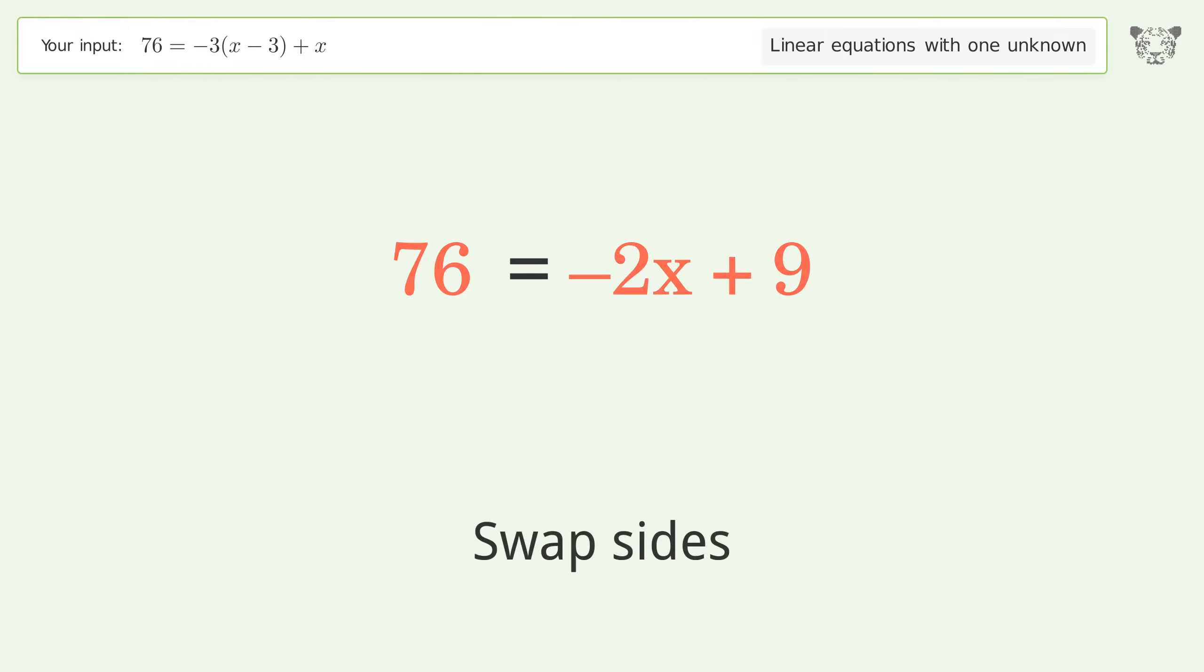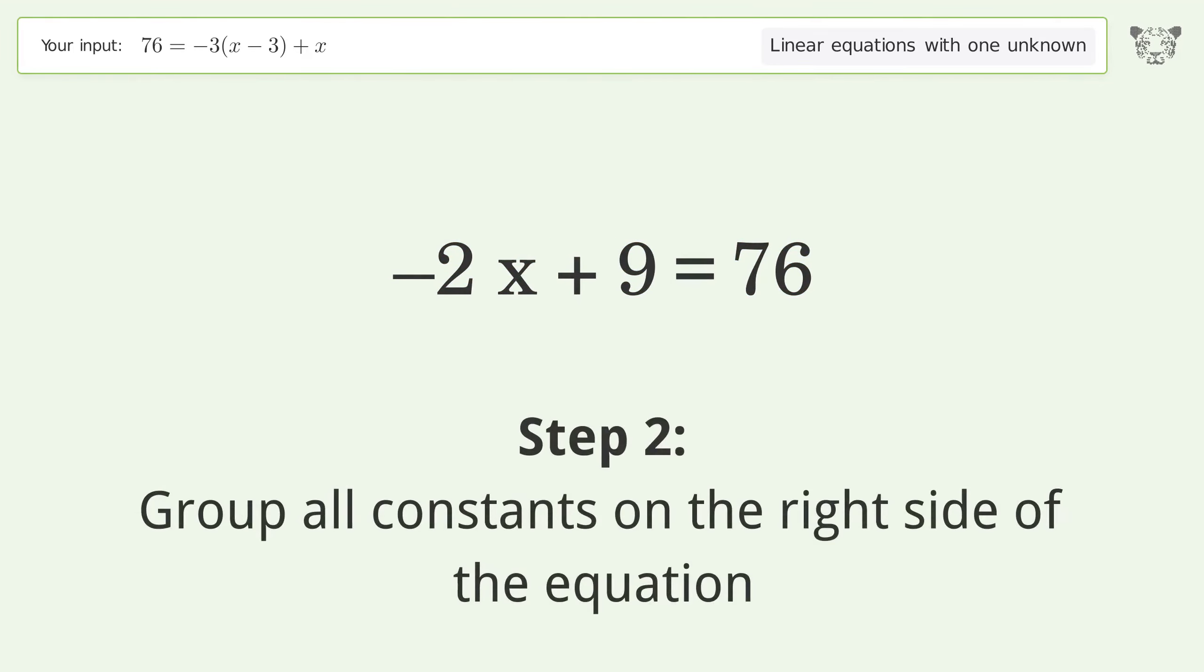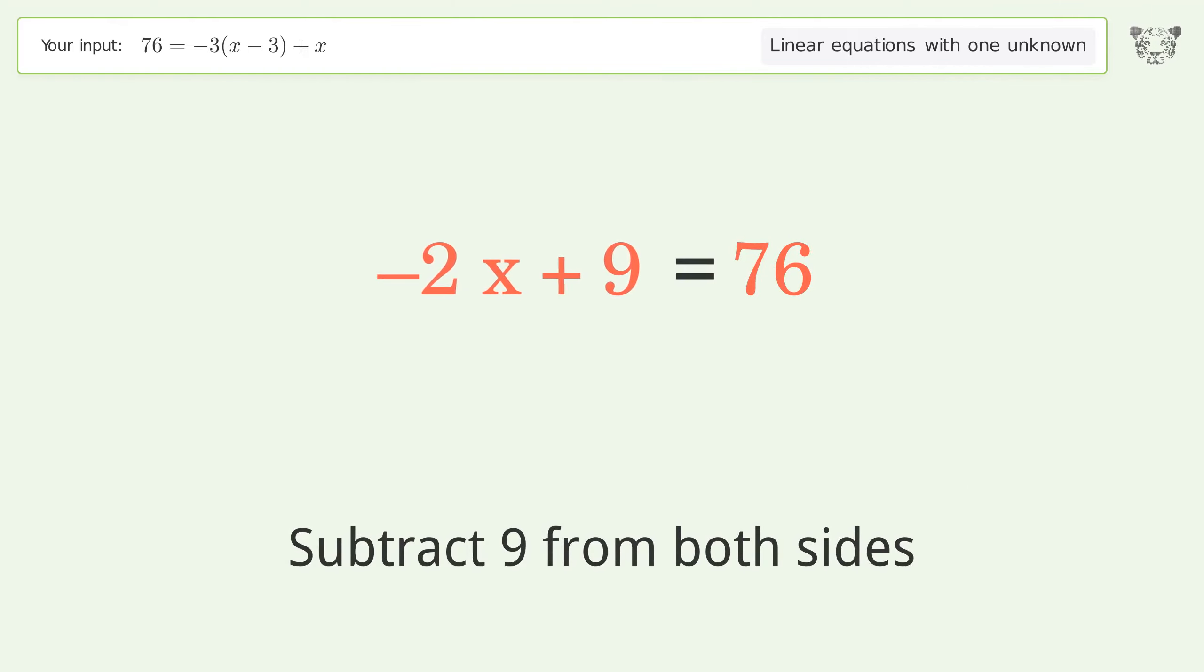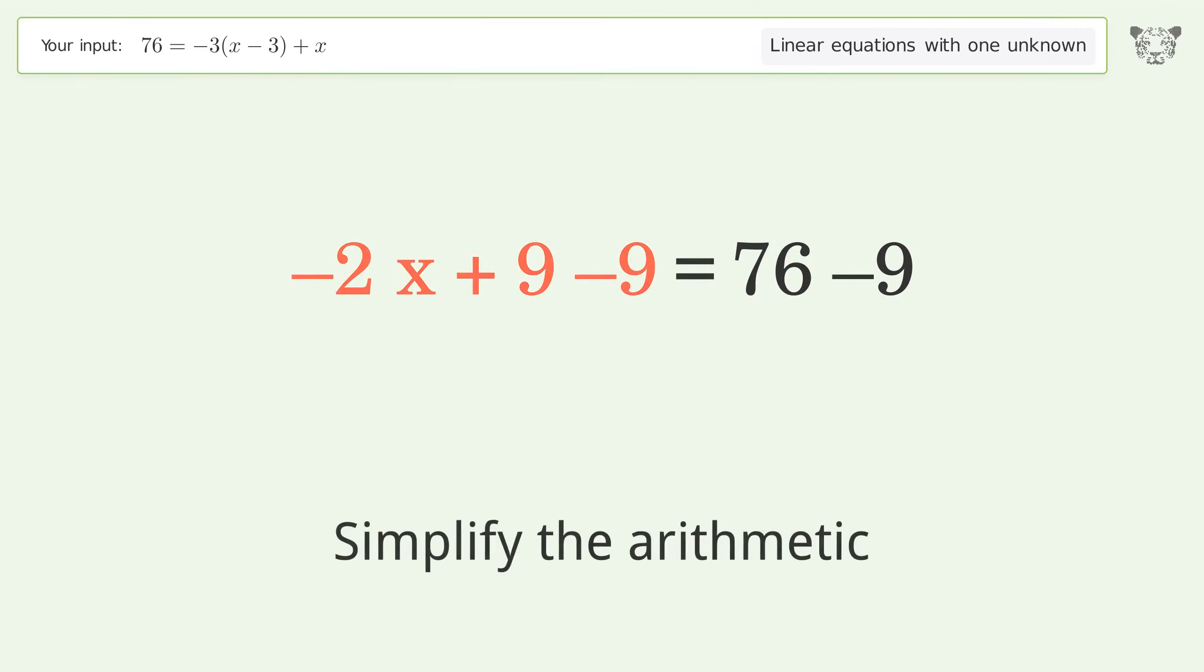Swap sides. Group all constants on the right side of the equation. Subtract 9 from both sides. Simplify the arithmetic.